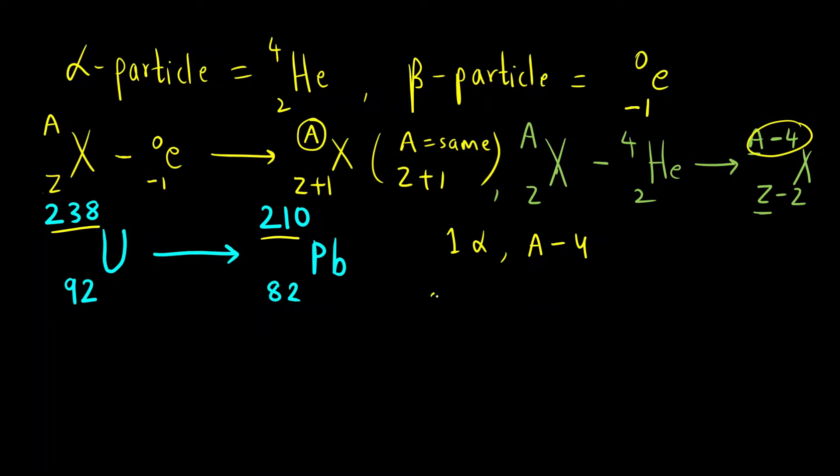What we can do? We can first find out the difference, that is 238 minus 210. This will give us the total difference. For one alpha particle, it decreases by 4 units, so we will divide by 4. 238 minus 210 is 28, divide by 4 is 7. So 7 alpha particles are lost.